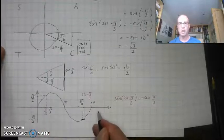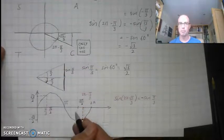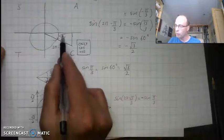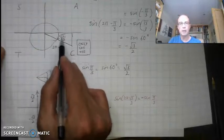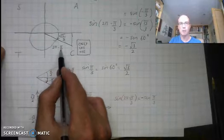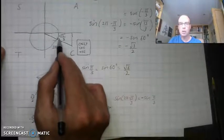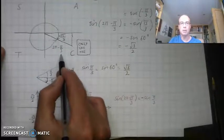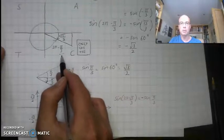So I can use my sine wave or use my CAST diagram. Either way, I'm looking for what this remnant of the angle is. So this is 2π minus π/3. I know the acute angle I'm going to be dealing with is π/3, 60 degrees.